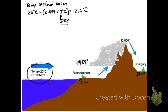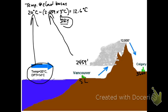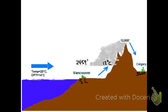To determine the temperature at the cloud bases, we take the temperature at sea level minus the elevation in thousands of feet times 3 degrees Celsius — the dry adiabatic rate — and we get 12.6 degrees Celsius. That is the temperature at the base of the clouds. Now we know the temperature at the cloud base is approximately 12 degrees Celsius.